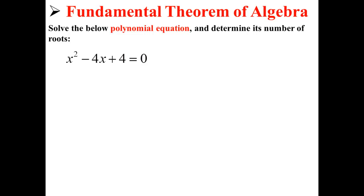Let's solve the below polynomial equation and determine its number of roots. Here we have the equation x squared minus 4x plus 4 is equal to zero. We can factor this to x minus 2 squared is equal to zero.